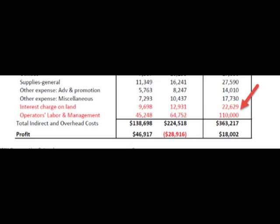Robert and Mary determined that each needed $55,000 in compensation for their labor and management efforts. Robert's wife didn't agree with the self-determined level of compensation, but his daughter knew better than to get in the middle of that discussion, so it remained at $55,000. Hence, a total of $110,000 was required for owner's labor and management, which would be allocated across the different enterprises.